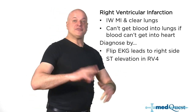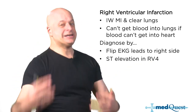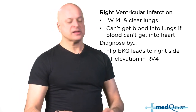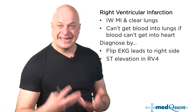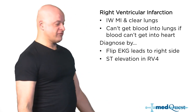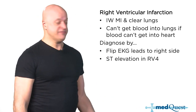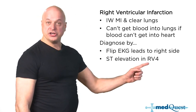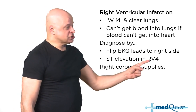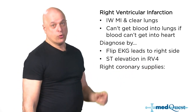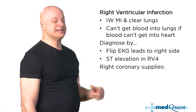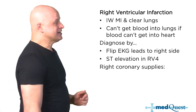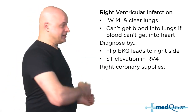Most EKG leads are on the left side of the chest, so you flip them over to the right side and look at right-sided lead V4 — the same way you look at V3, V4, V5 for anterior wall MI. On the right side you look for right-sided V4, also called reverse V4.